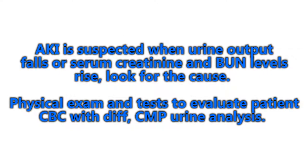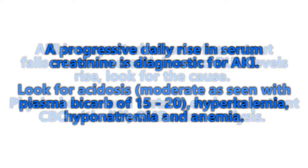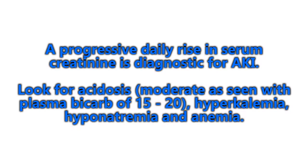AKI is suspected when urine output falls or serum creatinine and BUN rise. Look for the cause. Physical exam and tests to evaluate the patient include CBC with differential, complete metabolic panel, and urinalysis. A progressive daily rise in serum creatinine is diagnostic for AKI. Look for acidosis — moderate, as seen with plasma bicarbonate of 15 to 20 — hyperkalemia, hyponatremia, and anemia. AKI is often seen in hospitalized patients who become dehydrated or develop congestive heart failure, showing a steady rise in creatinine.